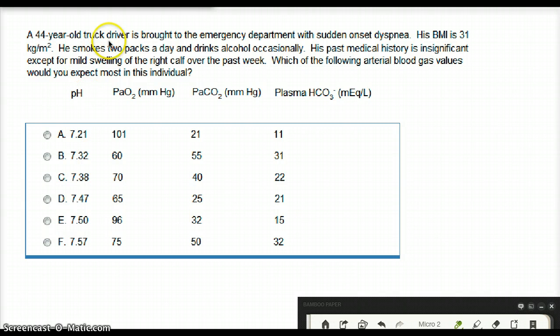A 44-year-old truck driver is brought to the emergency department with sudden onset of dyspnea. His BMI is 31, he smokes two packs a day, and drinks alcohol occasionally. His past medical history is insignificant except for mild swelling of the right calf over the past week. Which of the following arterial blood gas values would you expect most in this individual?